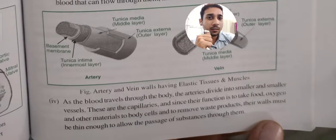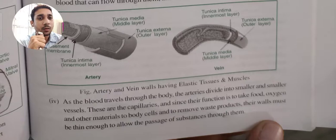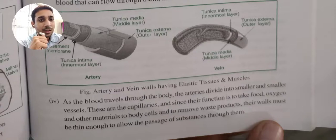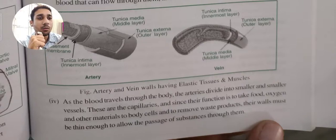As blood travels through the body, the arteries divide into smaller and smaller vessels called capillaries. Capillaries take food, oxygen, and other materials to the body cells, remove waste products, and allow passage of substances between arteries and veins.